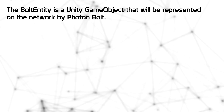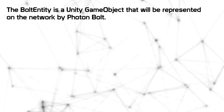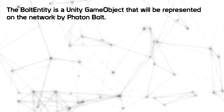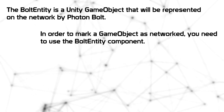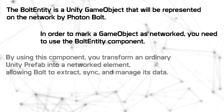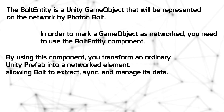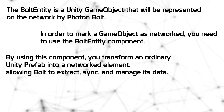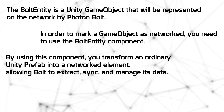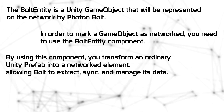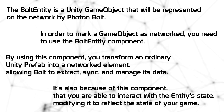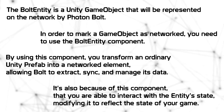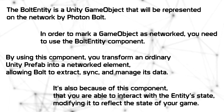Photon Bolt defines the Bolt Entity as a Unity game object that will be represented on the network by Photon Bolt. In order to mark a game object as networked, you need to use the Bolt Entity component. By using this component, you transform an ordinary Unity prefab into a networked element, allowing Bolt to extract, sync, and manage its data. It's also because of this component that you are able to interact with the Entity state, modifying it to reflect the state in your game.